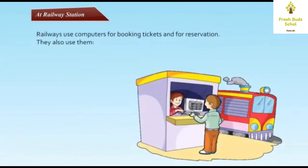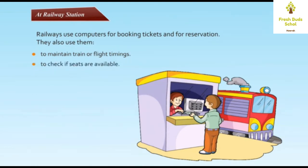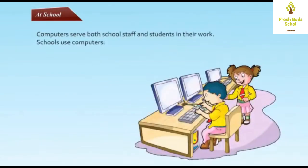At Railway Station: Railways use computers for booking tickets and for reservation. They also use them to maintain train or flight timings, to check if seats are available, and to issue tickets or book seats.